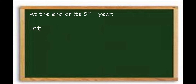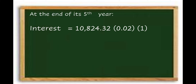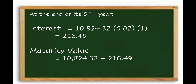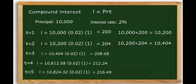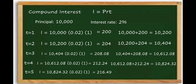For the fifth year, the principal is ₱10,824.32 × 0.02 × 1 = ₱216.49. The maturity value is ₱10,824.32 + ₱216.49 = ₱11,040.81. Compound interest summary: year 1: ₱10,200; year 2: ₱10,404; year 3: ₱10,612.08; year 4: ₱10,824.32; year 5: ₱11,040.81.